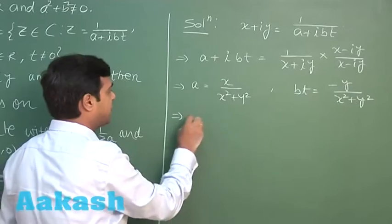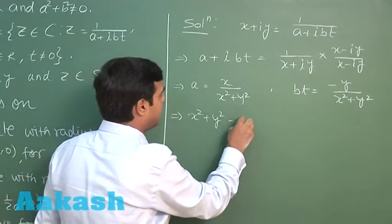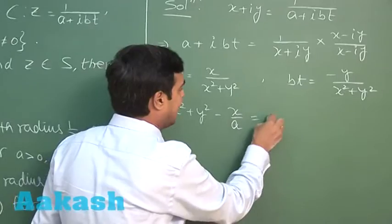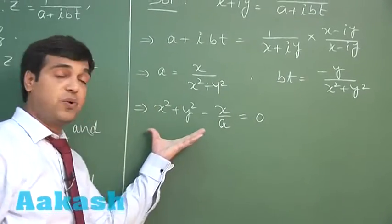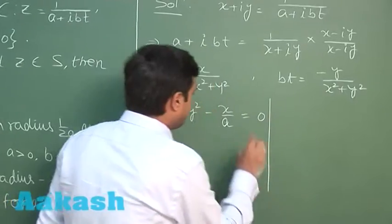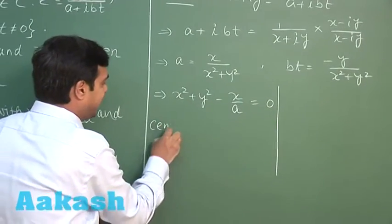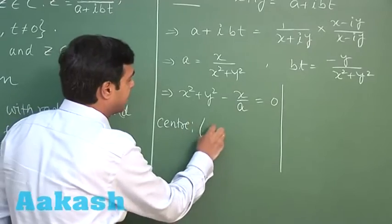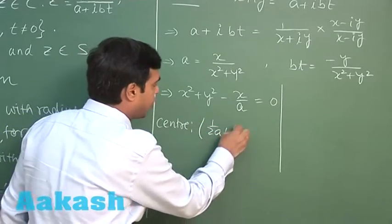If we look at this, we can say the center is coming as (1/(2a), 0), whether a is positive or negative.